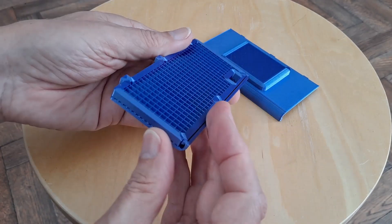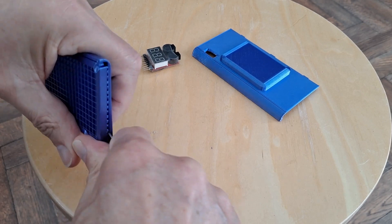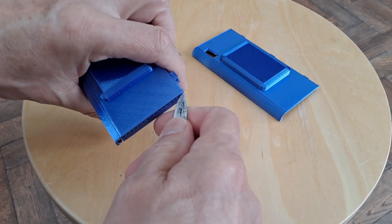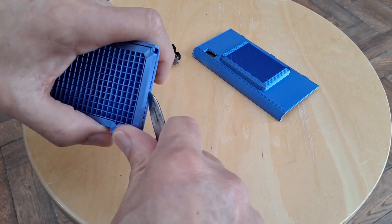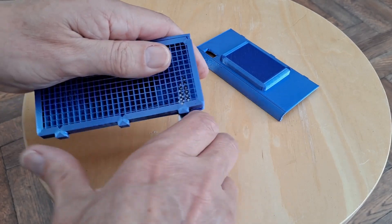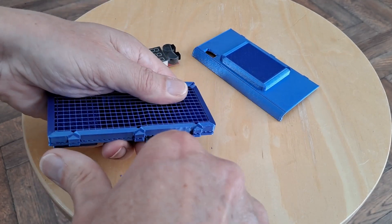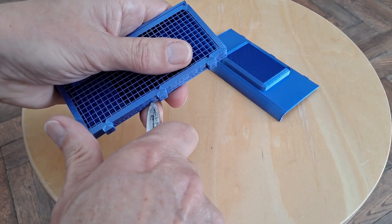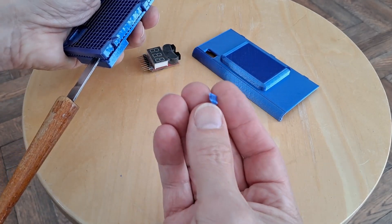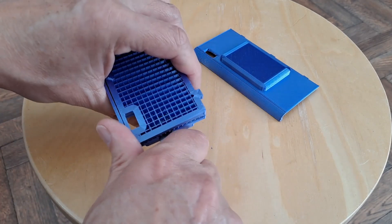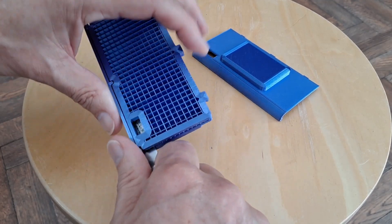So, let's see if we can get this out. It's one of those designs where you've got more support than you have actual item that you're trying to print. Ah, that wasn't good. I just broke off one of the bits that I'd printed. Ah, that was a fail. I was getting too carried away with the spudger, as Big Clive calls them.